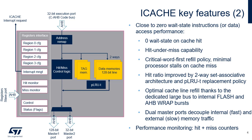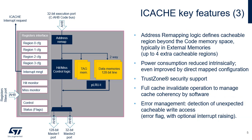For example, SRAM fetches are not stalled by cache line refills from external memories. Interrupt latency is minimized when the interrupt service routines are located in the internal flash or SRAMs. The iCache implements performance counters: one 32-bit hit counter and one 16-bit miss counter. This performance monitoring analyzes and optimizes code placement in accordance with cacheability to achieve the most performant code traffic. The remapping logic is very convenient to extend the cacheable region beyond the 512-megabyte code memory address range, which starts at address 0.